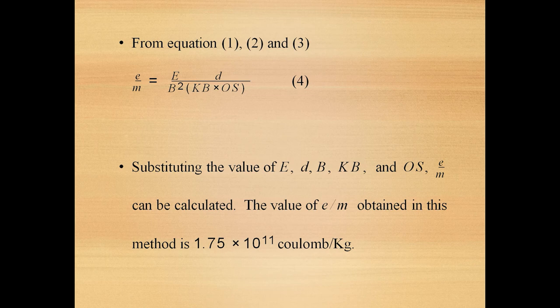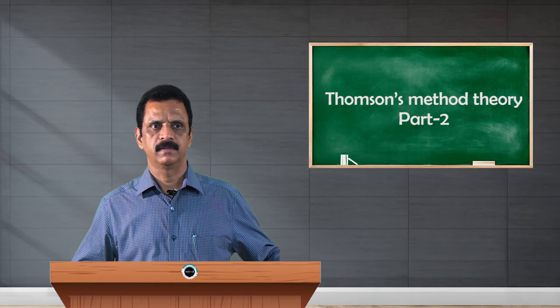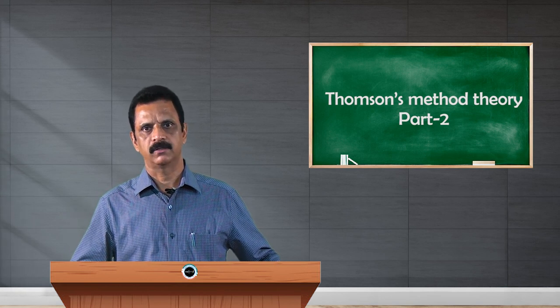This method was adopted by J. J. Thomson in the year 1897, and the value obtained by him is 1.75 × 10¹¹ coulomb per kilogram. This is one of the outstandingly nice experiments performed by J. J. Thomson, who ingeniously exploited the idea of electric and magnetic fields to precisely determine one of the very important constants in atomic physics. That is all about E/M of electrons by Thomson's method. Thank you.